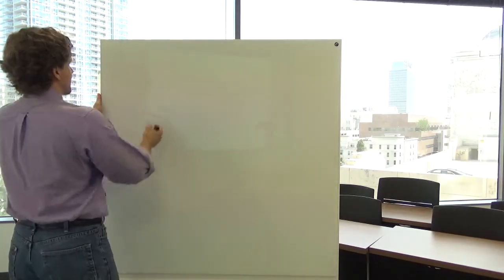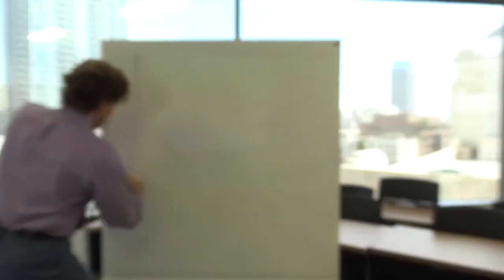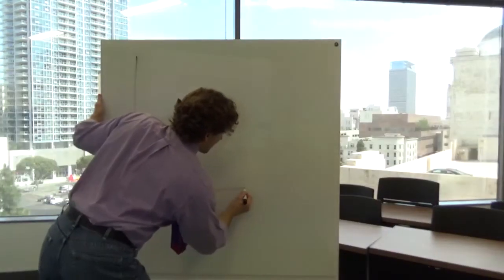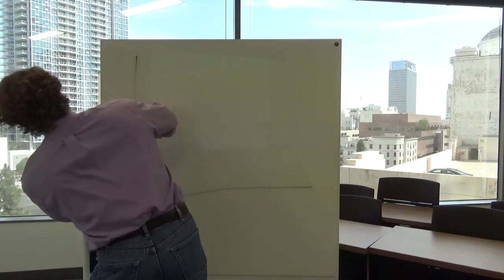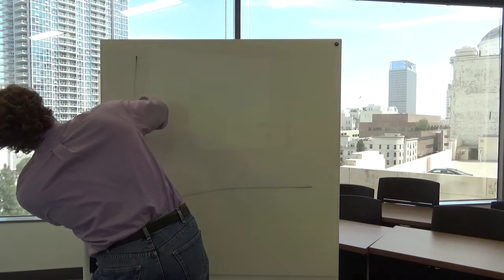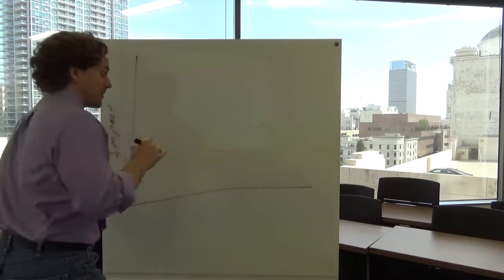So what we're going to do first is draw our graph. We're going to put impact here on the side, and on the bottom we're going to put uncertainty.